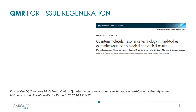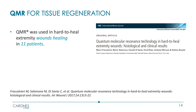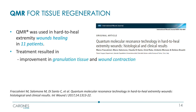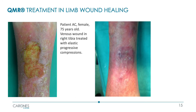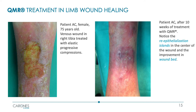This is a very interesting study on QMR treatment for the healing of wounds on the extremities of the limbs — wounds that were struggling to heal. The study shows that after QMR treatment there was an increase in granulation tissue, a reduction in pain and inflammatory cells, with a consequent acceleration of the healing process. Two images show the ulcer before and after QMR treatment.